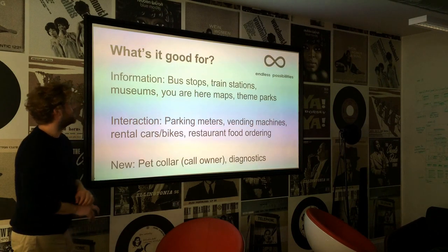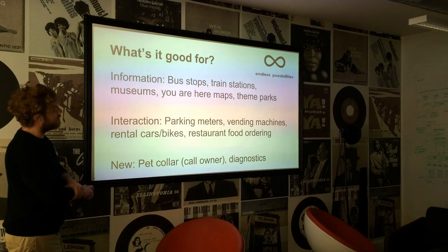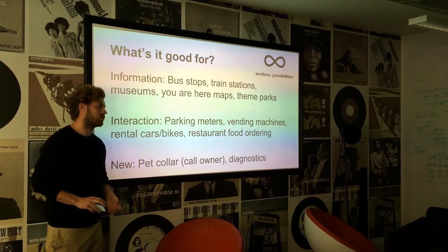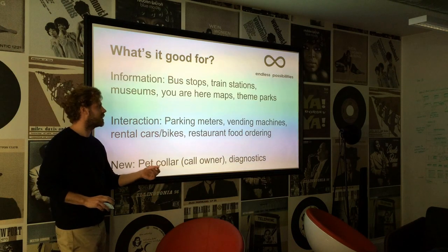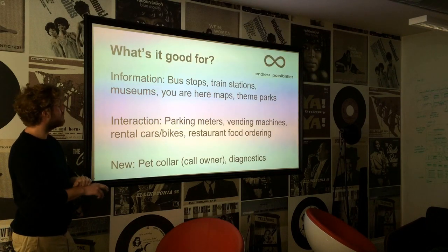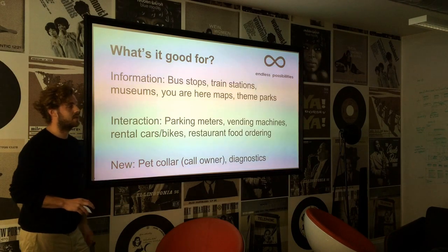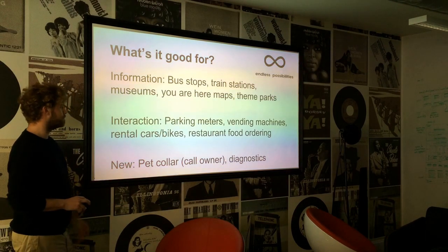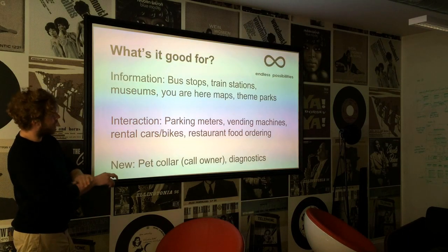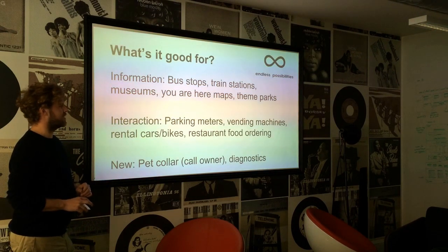So what can we do with it? Information — bus stops, train stations, museums, parks — wherever. You could go somewhere and it would say 'I've got some info about where you currently are.' Click it and get bus timetables or train timetables. Museums could have one beacon per room and pull up a little site with information about the current room. For interaction: parking meters, vending machines, rental cars, bikes, food ordering — all those nice things which currently you kind of need an app for.